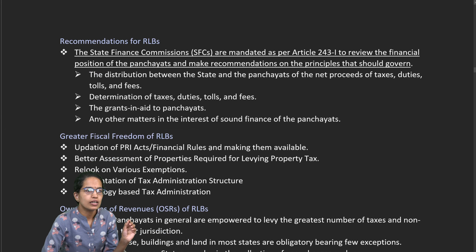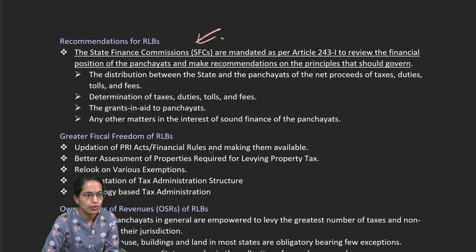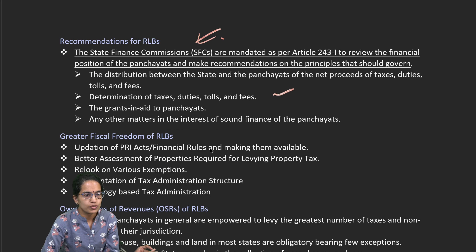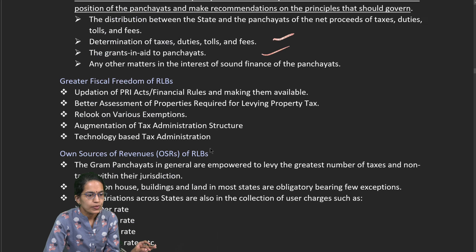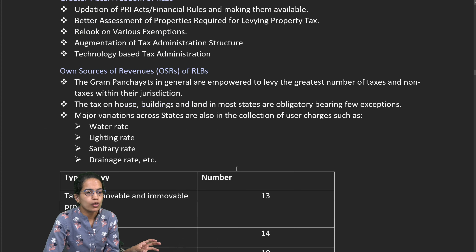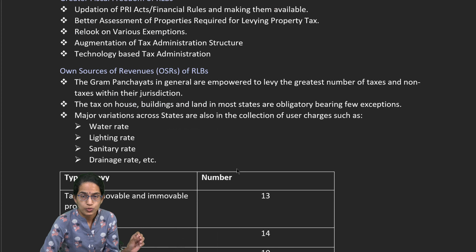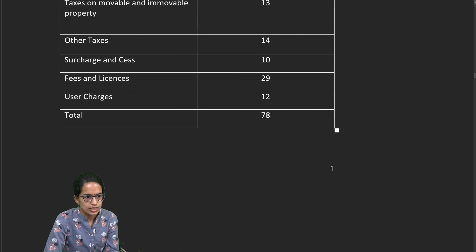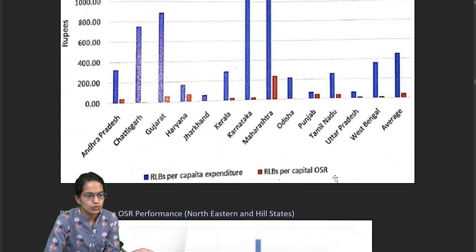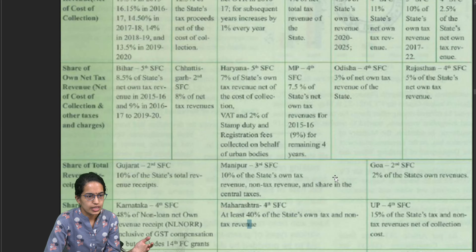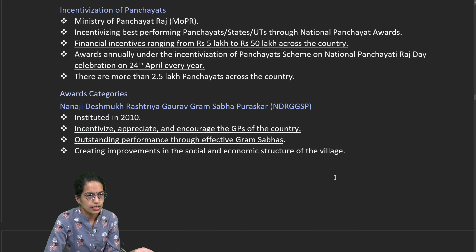Rural local body recommendations have been laid down mainly for taxes, duties, tolls, fees, grants, and aids to the panchayat. Some own sources of revenue for rural local bodies include water, lighting, sanitary, and drainage rates. The rates have been decided according to the information given, along with certain statistics.